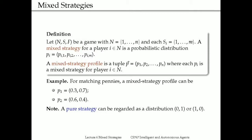We can of course define the mixed strategy profile where all players are playing some sort of mixed strategy — that profile is just a tuple of mixed strategies of all the players. As an example, in the matching pennies game where we have two options for each player, one mixed strategy could be: player one plays head with 0.3 probability and tail with 0.7 probability, while player two plays head with 60% chance and tail with 40% chance. That could be an example of a mixed strategy profile.